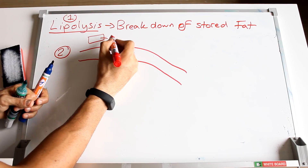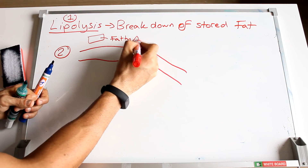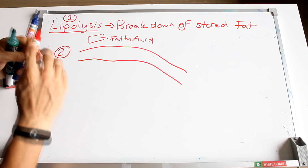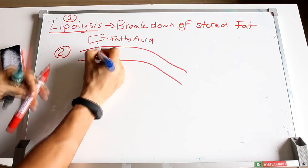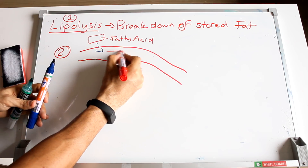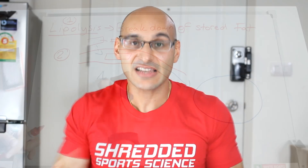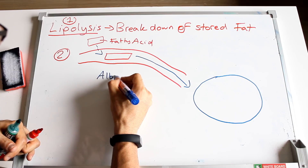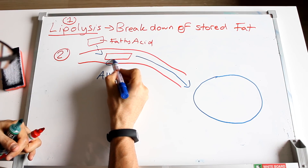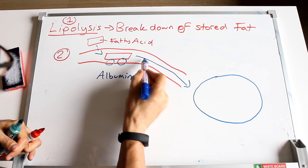Step two involves the transport of these fatty acids through the bloodstream to the target cell where they're going to be burnt up as energy. When the fatty acid is drawn into the bloodstream, there is a protein called serum albumin which acts as a taxi — it helps transport that fatty acid to the target cell. I've drawn some wheels here as though it's a taxi taking those fatty acids to where it needs to go, to where you are putting the demands on your body. That's the mobilization of these fatty acids.